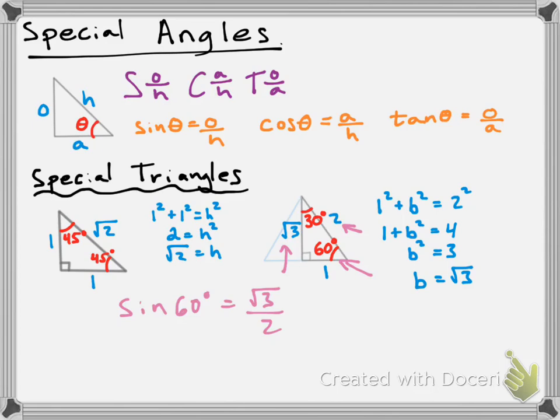This is the exact form of the sine of 60 degrees. If you type that into your calculator, you'll get a decimal — but this is the exact form, and this is what we're going to be using for a good chunk of this unit. So remember your special triangles and how to take sine, cosine, and tangent, and that will allow you to find the trig ratios of all these special angles.